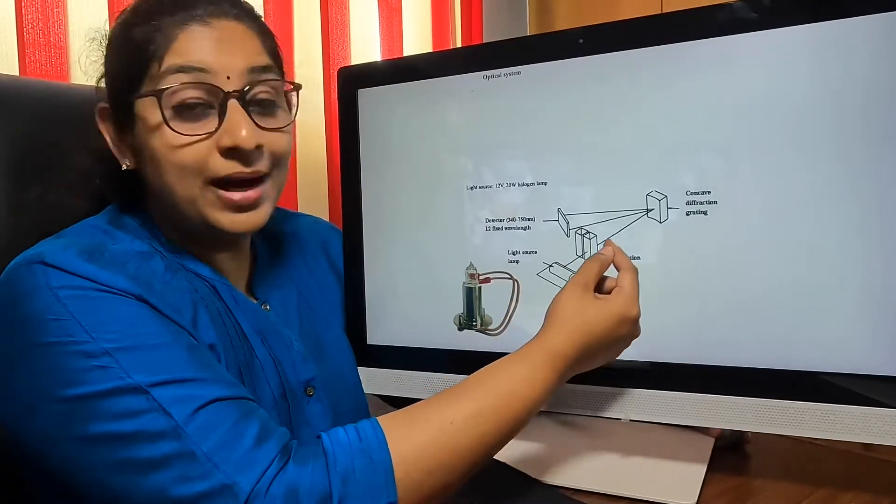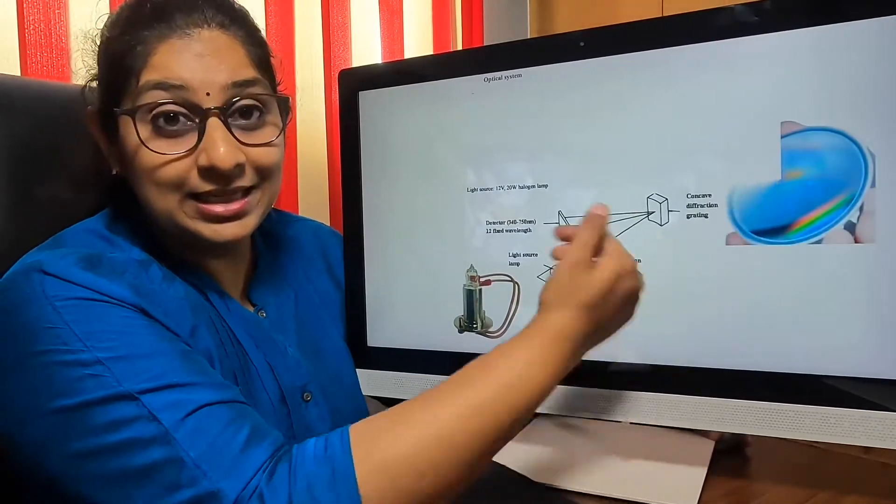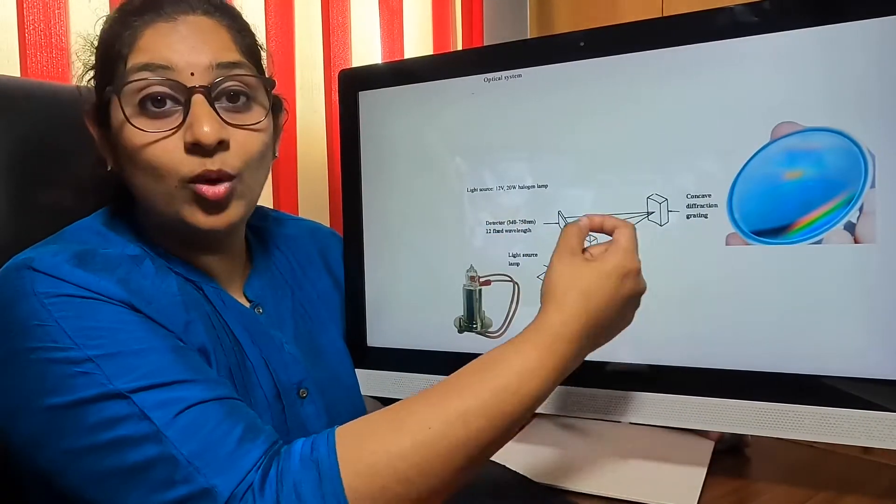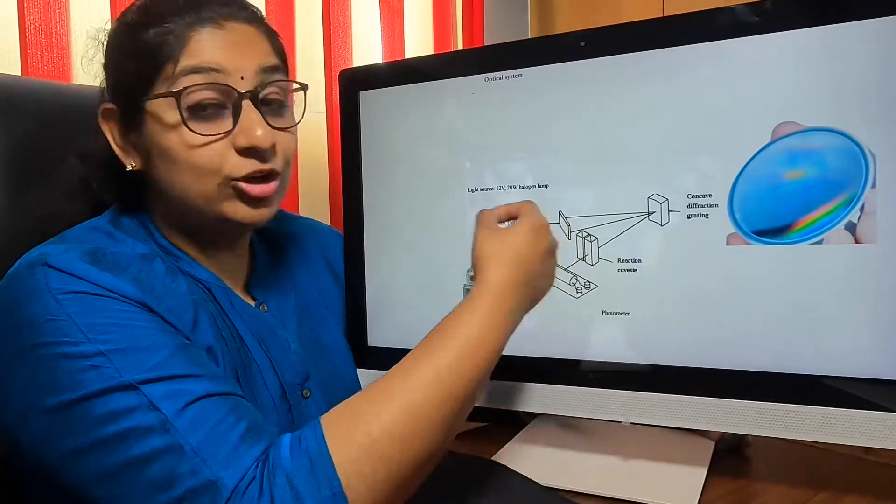From this, the light passes through the reaction cuvette into the concave diffraction grating system, and from that, whatever particular wavelength we have, the light is going to go into the detectors.